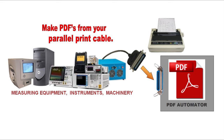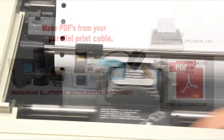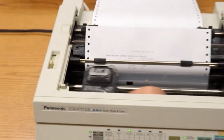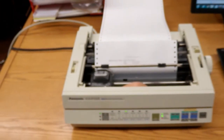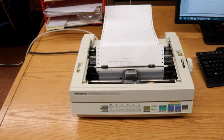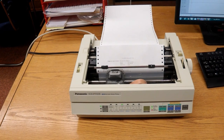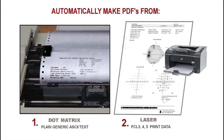Make PDFs from your parallel print cable. PDF Automator is meant to replace dot matrix printers that print plain generic ASCII text. Automatically make PDFs from plain ASCII generic text data, or laser and inkjet PCL 3, 4, or 5 print data.